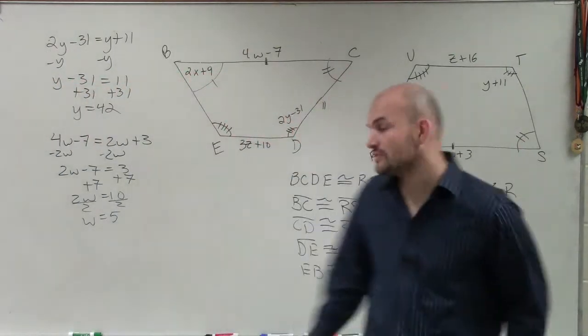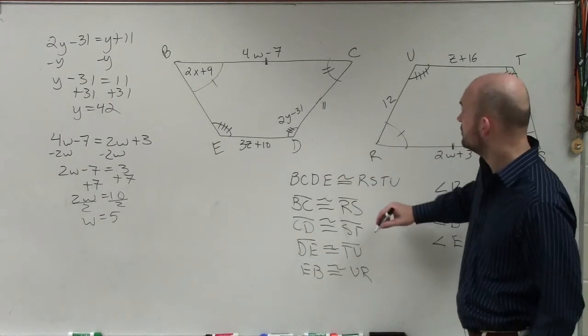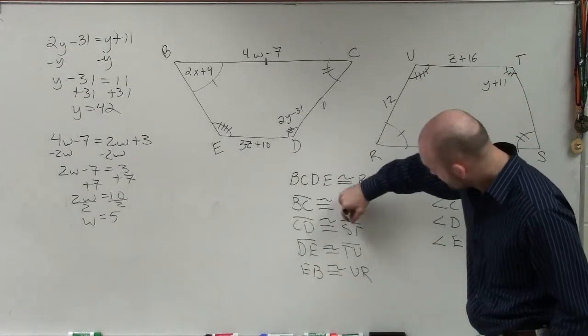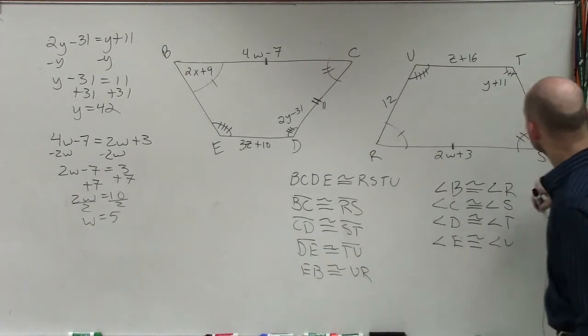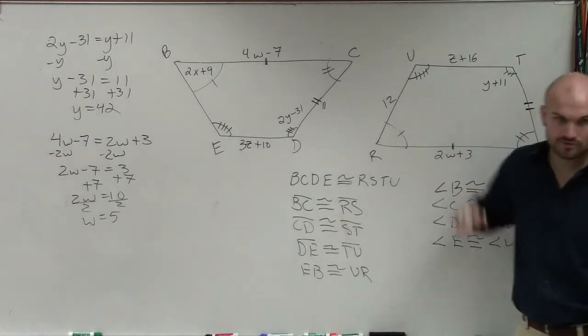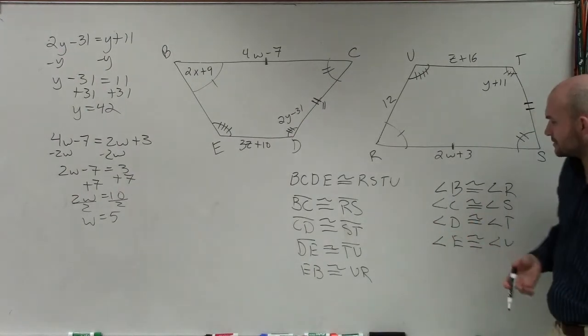Now let's continue on with our side lengths. C, D is congruent to S, T. So where's C, D? C, D is right here. C, D is congruent to S, T. These two sides are equal to each other, but they don't have a variable, so we're not concerned about them.